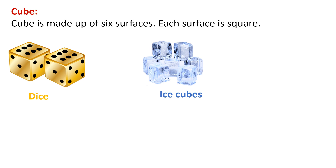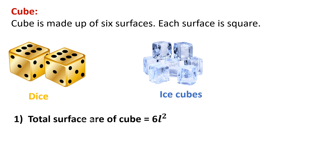Another example of a cube is ice cubes. For a cube, since all six surfaces are squares and all sides are equal, the formula for total surface area of cube equals 6l², and the volume of cube equals l³, that is length × length × length. Now let's start with practice set 16.1.